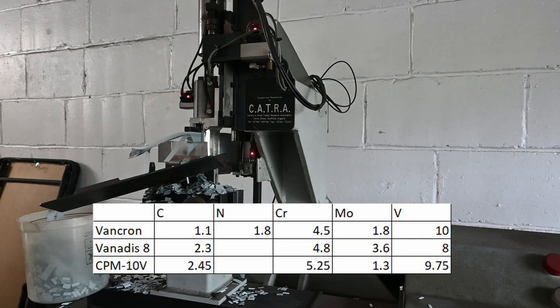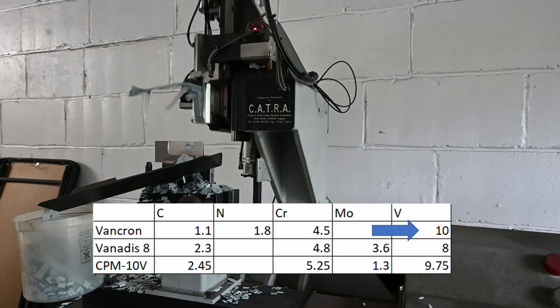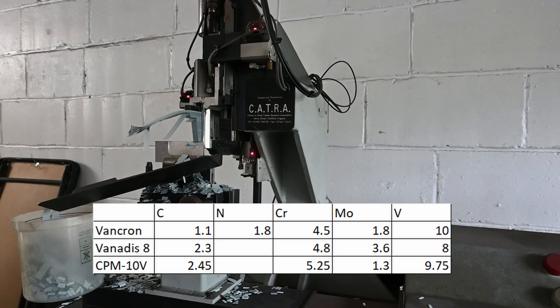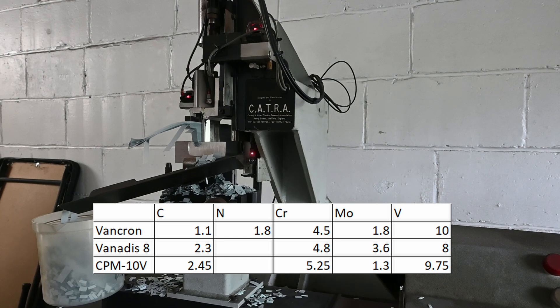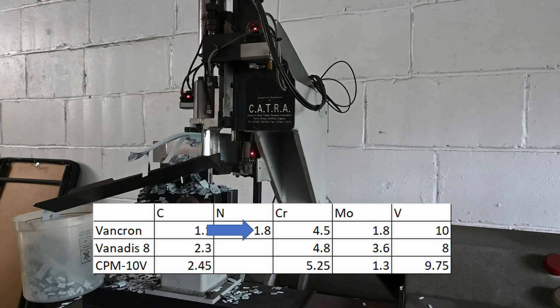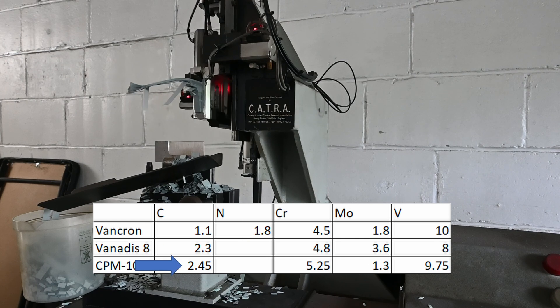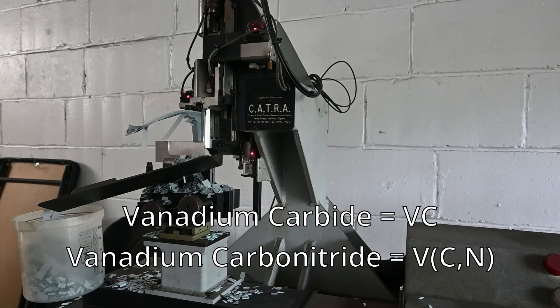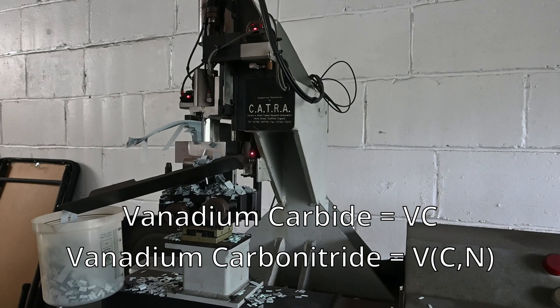VANCRON has a very healthy amount of vanadium at 10%, a similar amount to steels like CPM-10V, K390, and Vanax-8. But unlike those steels, VANCRON has a combination of carbon and nitrogen, while those steels have only carbon. So those steels form vanadium carbides, but VANCRON forms a vanadium carbonitride, a compound with both carbon and nitrogen.